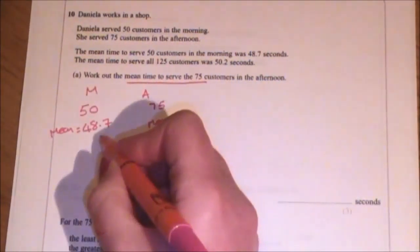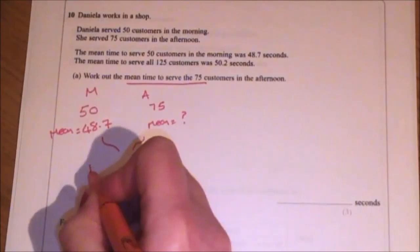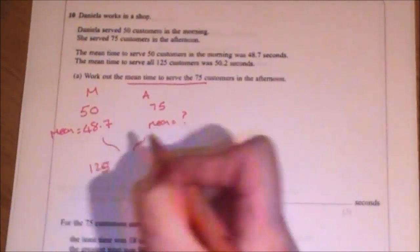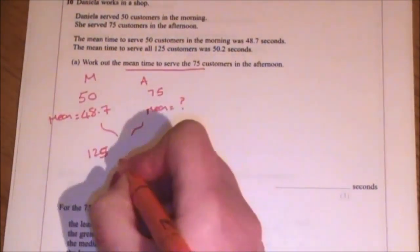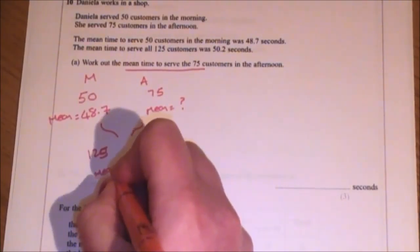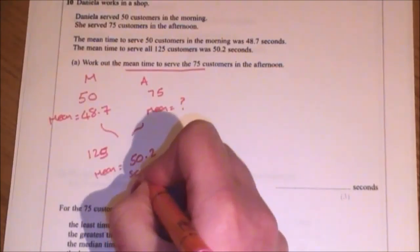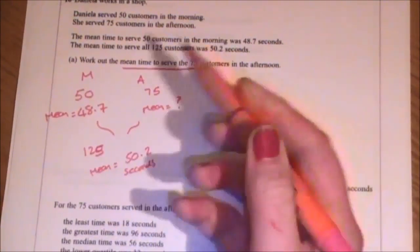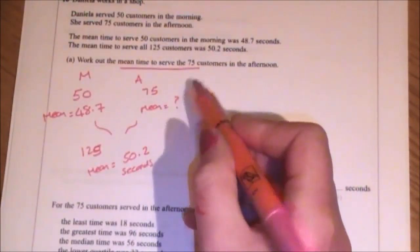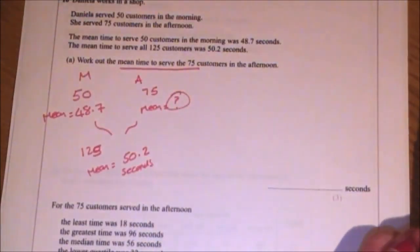I know that in the afternoon there was 75 customers and the mean is unknown. That's what I want to find out, the mean time to serve in the afternoon. What they have told me though is that altogether there were 125 customers and they had a mean time of 50.2 seconds. So I need to use all that information to find out what the mean was over here.